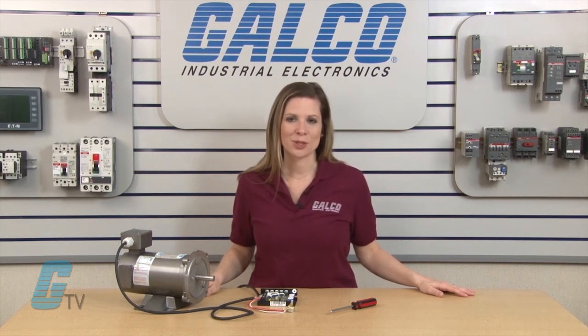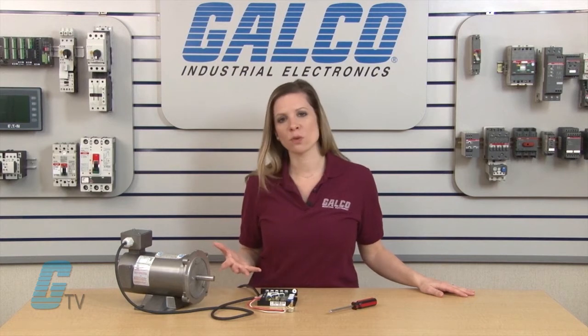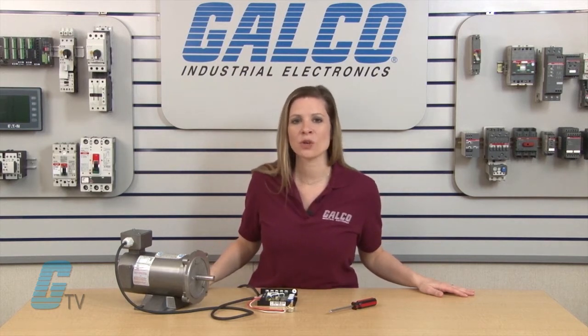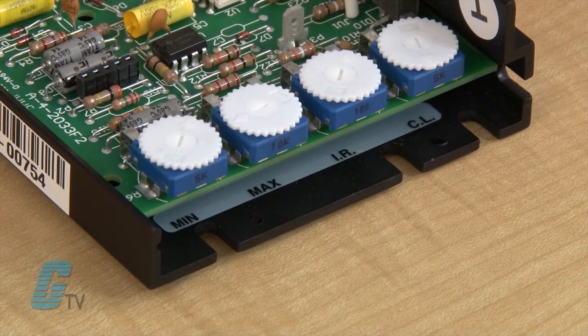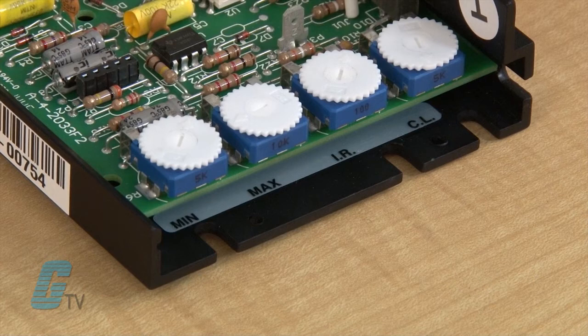This controls the armature speed by changing the armature voltage to compensate for increased or decreased motor load. The current limit trim pot provides protection from excessive armature current by limiting the maximum armature current the control can provide. This enables adjustment of the maximum torque the motor can deliver.